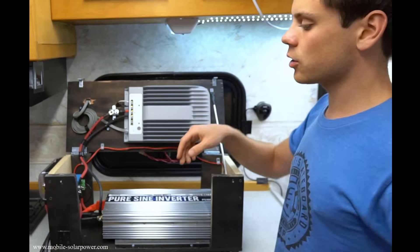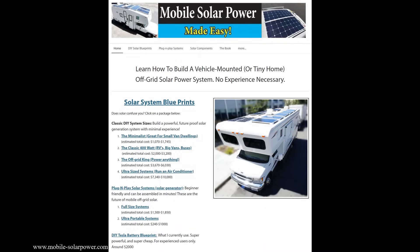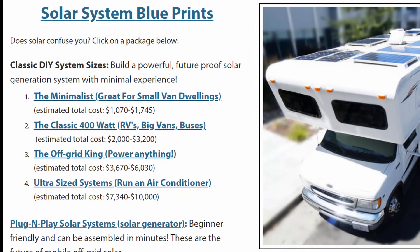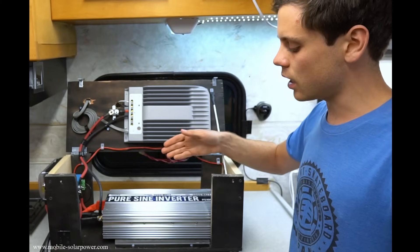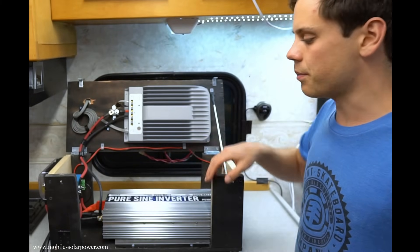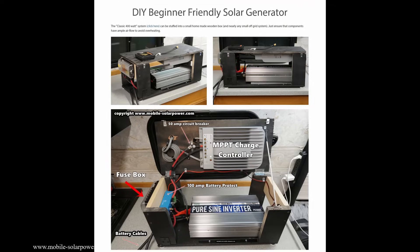This is designed to work with any of the systems that I recommend in my other videos or on my website. So the classic 400 watt, the minimalist, the off-grid king, all of those systems you can build in a box. If you want detailed pictures of this box please check out my website as well.